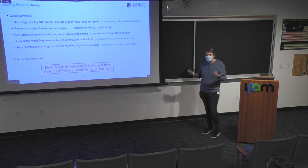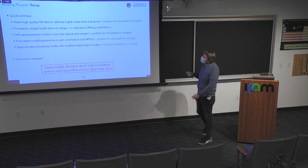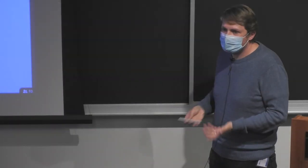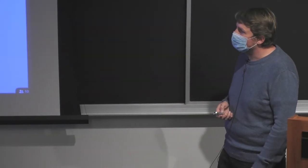A quick summary of known limitations: we need high mass-ratio and high-spin NR data; precession angles will break down near merger and need NR calibration; SPA is a problem for frequency-domain models; the final state is sensitive to spin orientations; and we approximate precessing modes with modified aligned-spin modes. We expect high mass-ratio, highly-precessing binaries to be the most problematic.